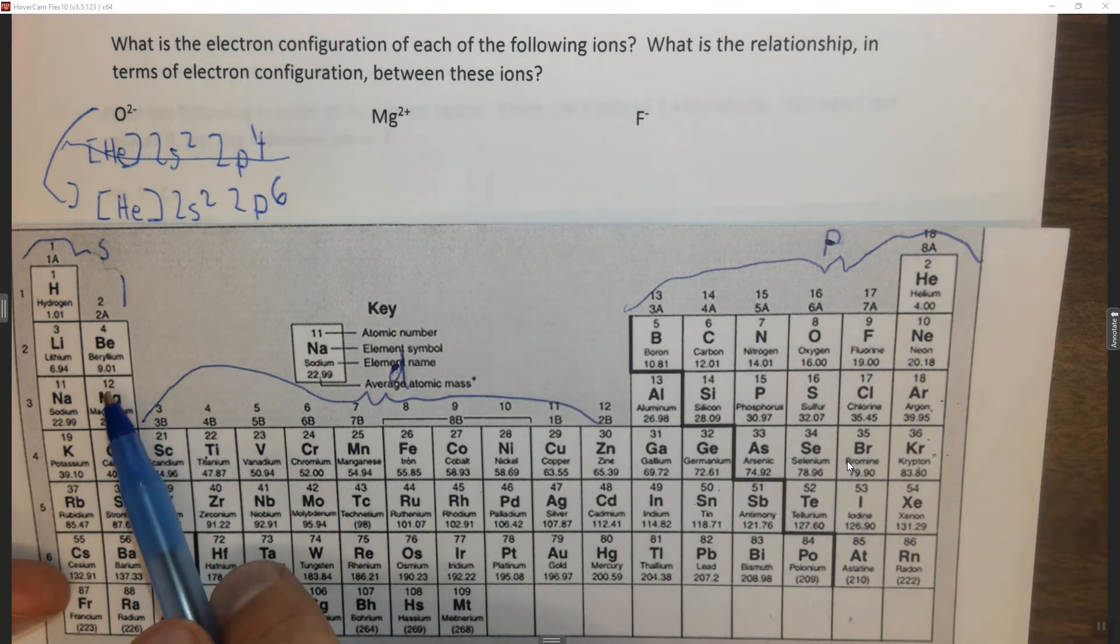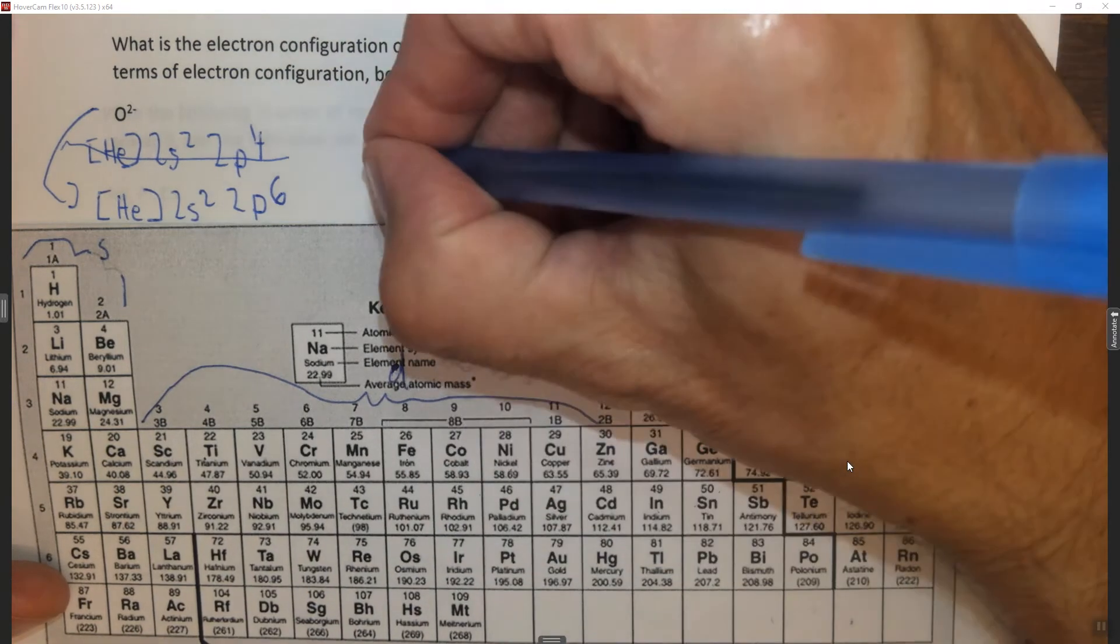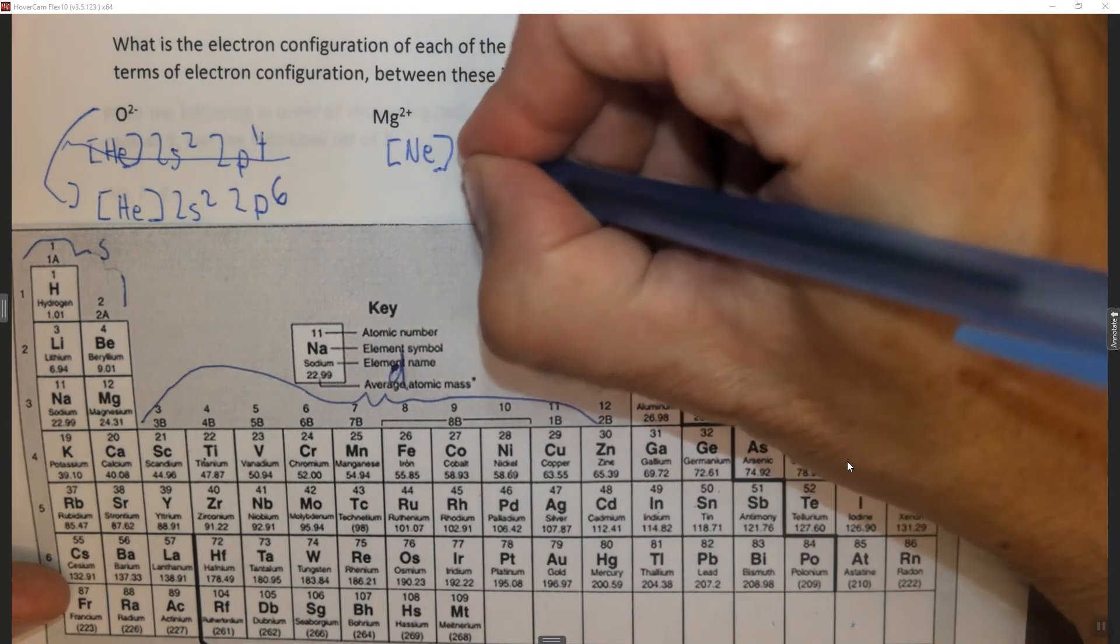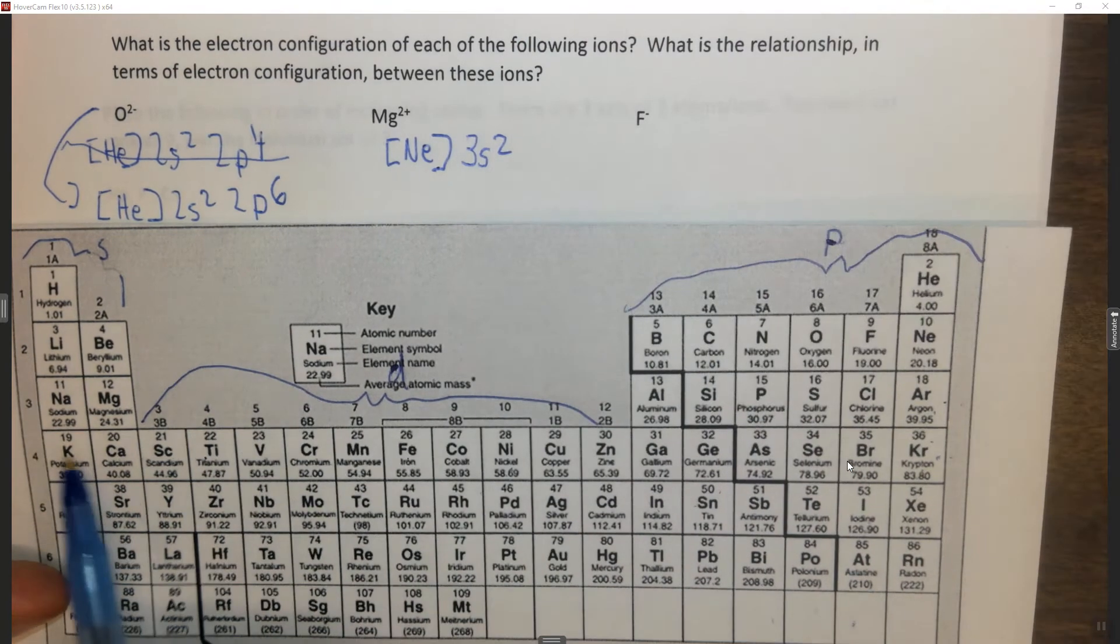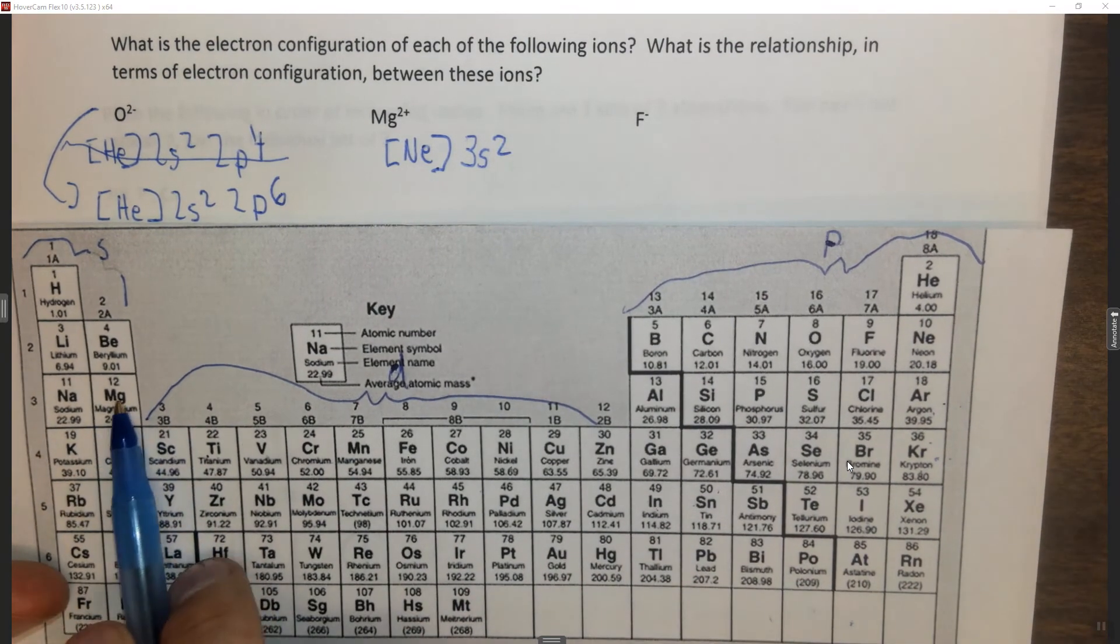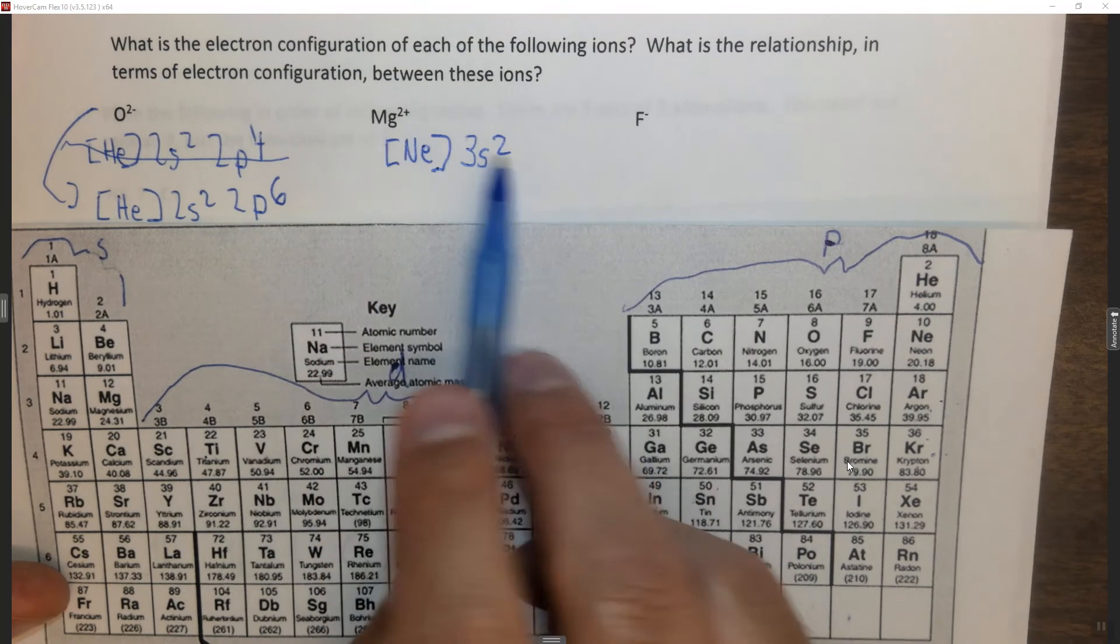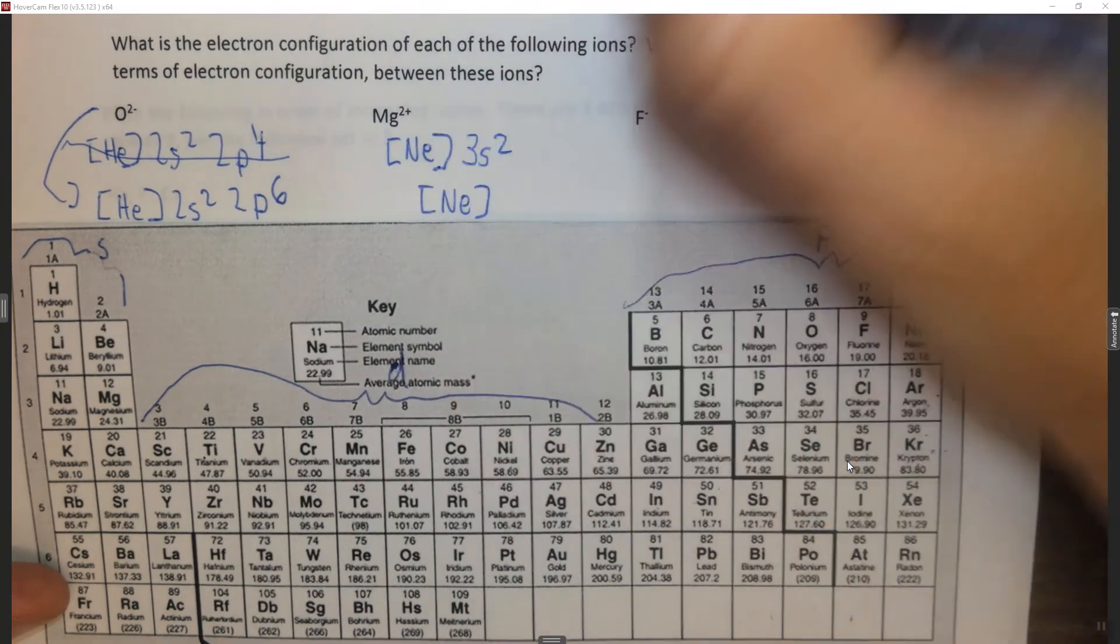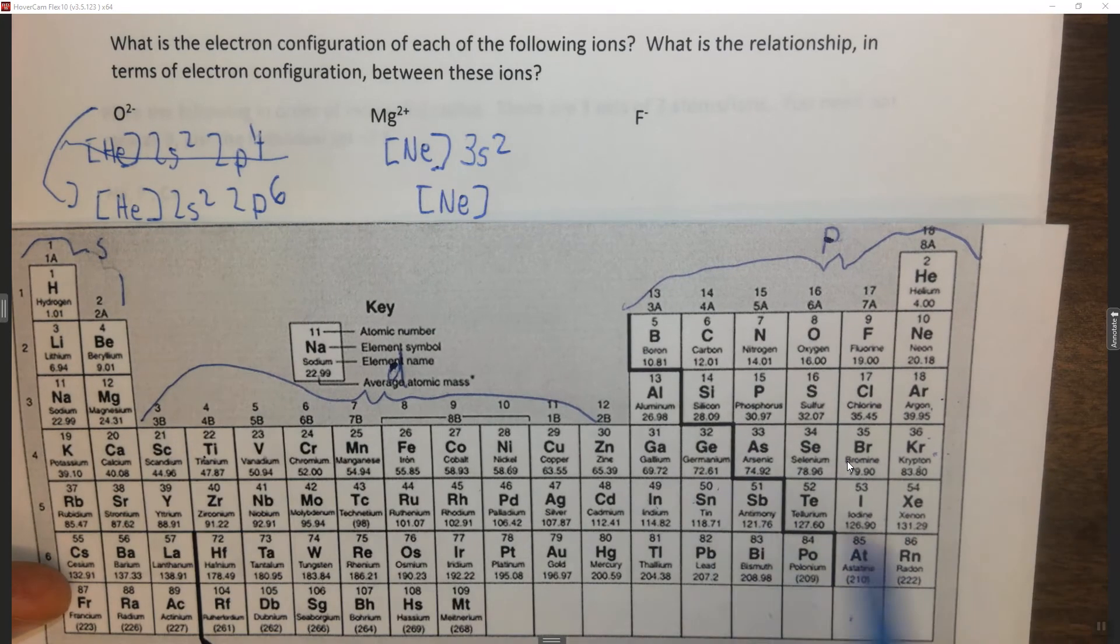Mg²⁺ would be neon, 3s². This is Mg, right? So Mg is neon, 3s². If it's 2 plus, it loses its last two electrons. So this would be neon, or you could write it as helium, 2s², 2p⁶.